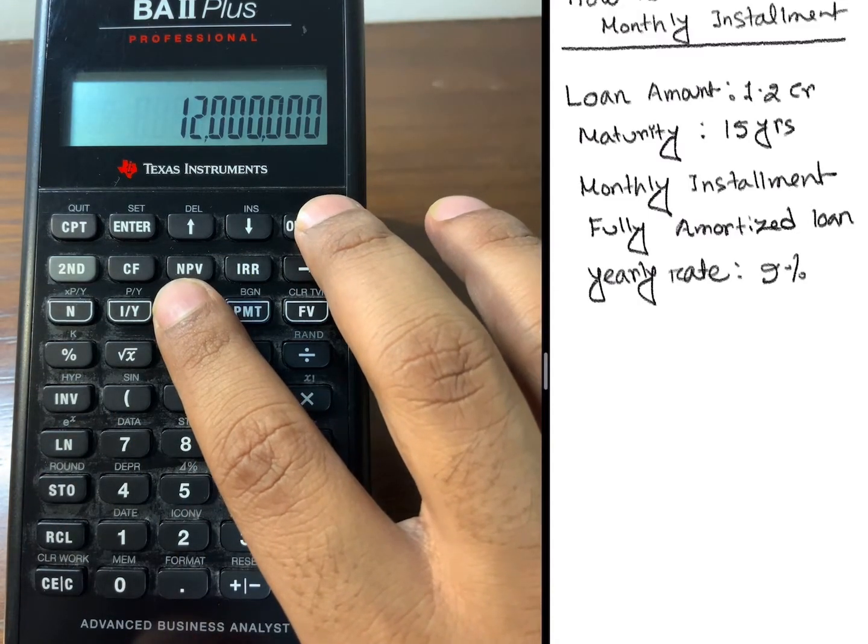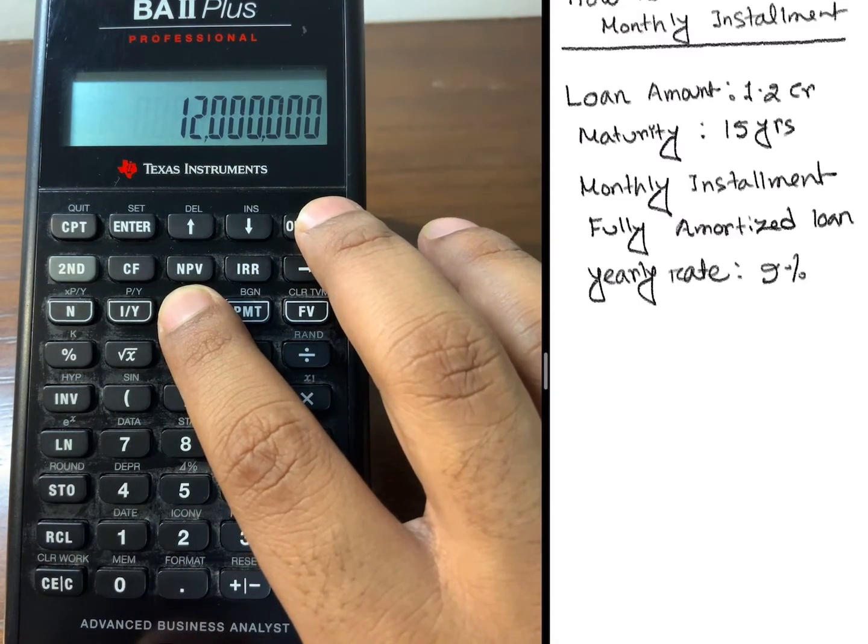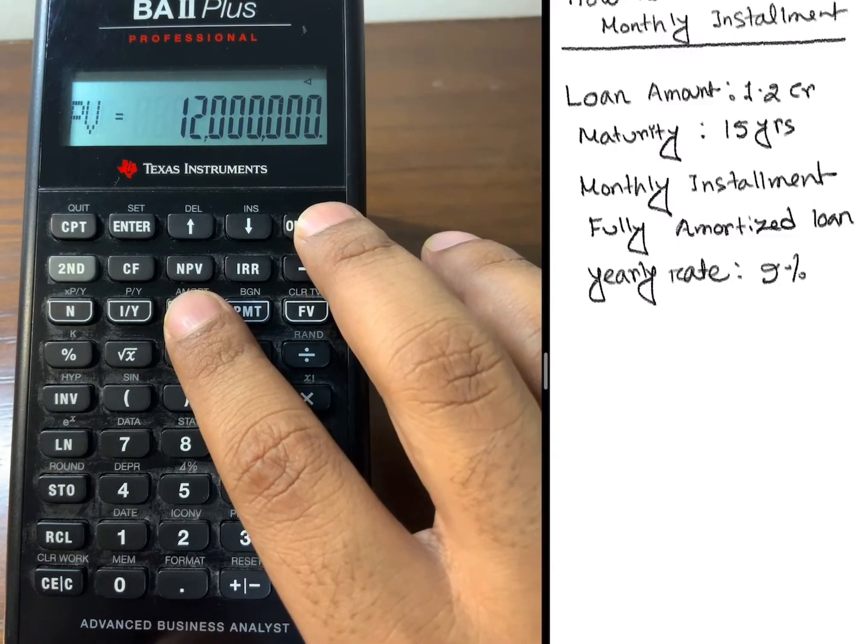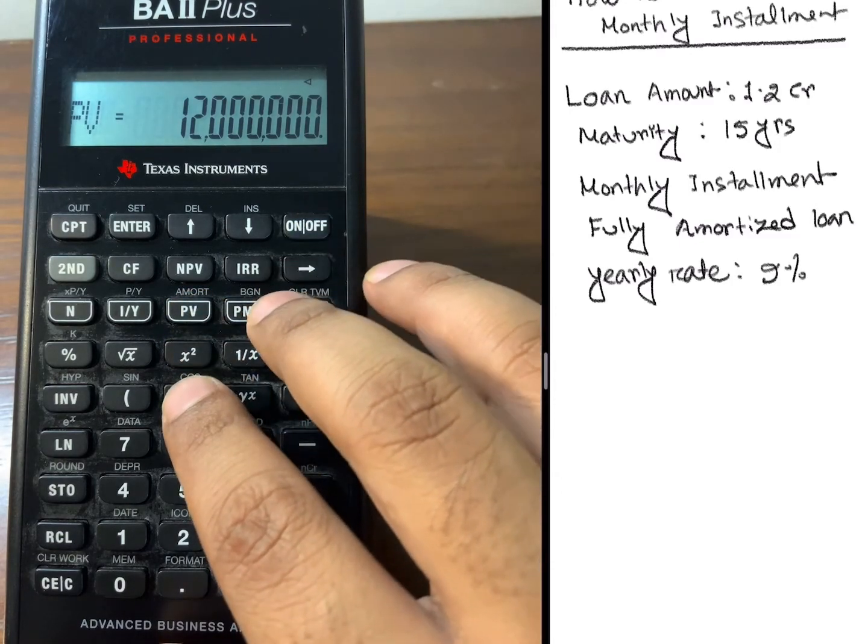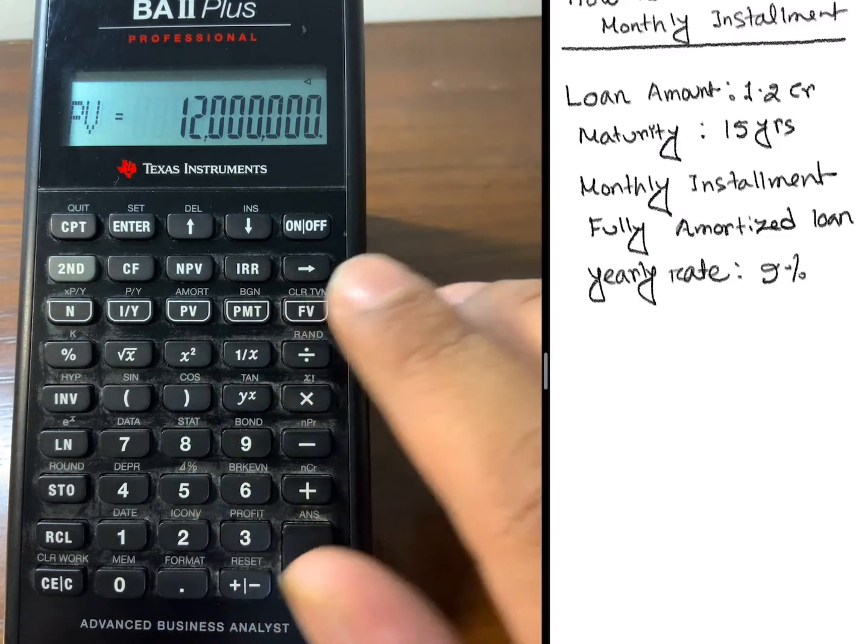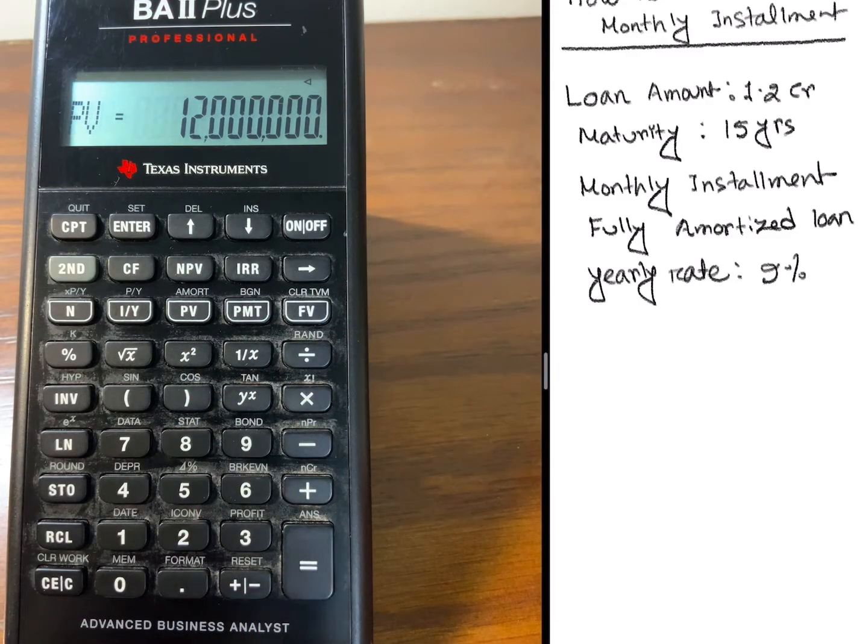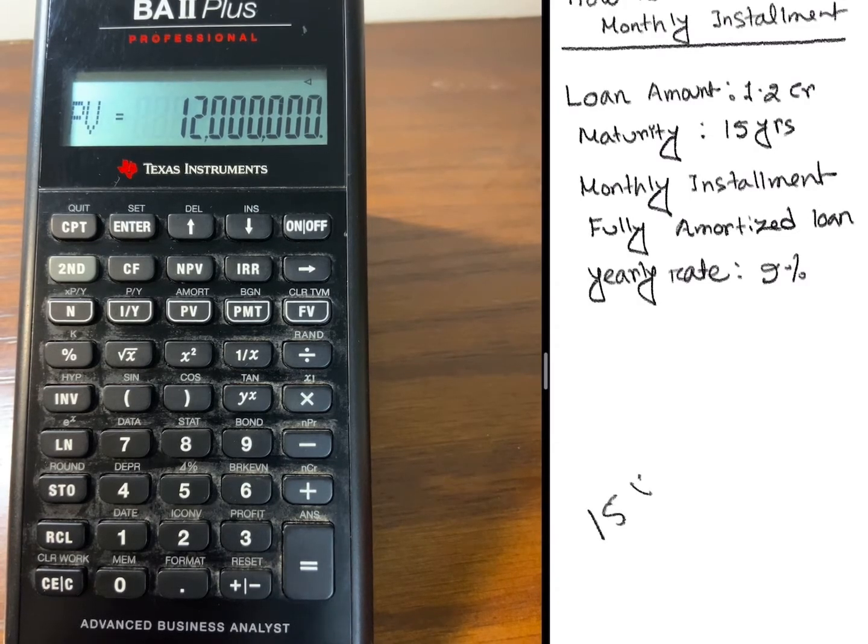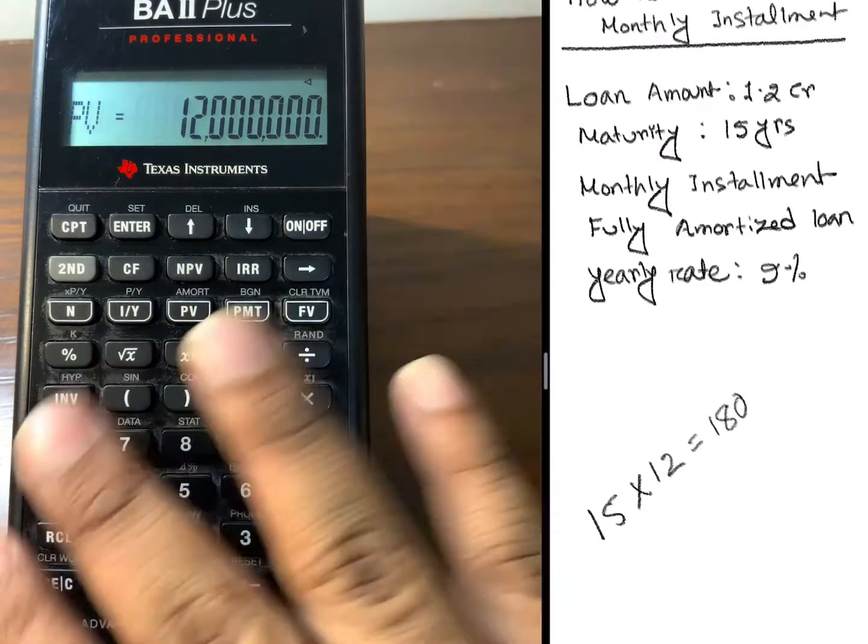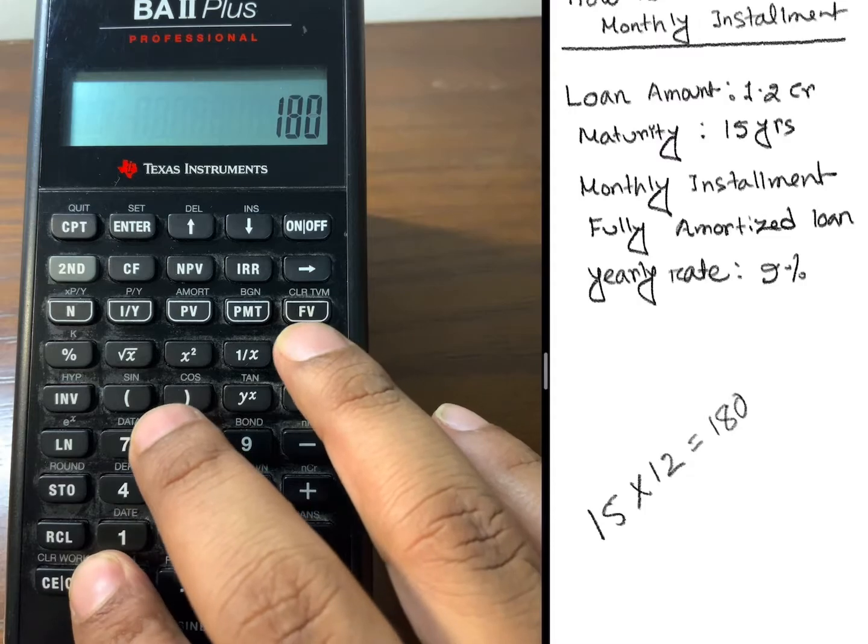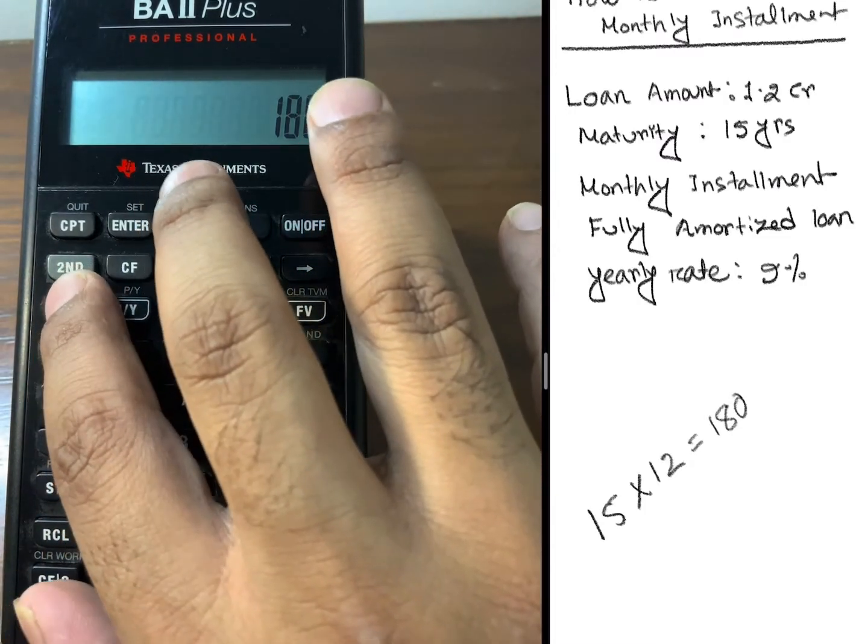Then I'll give the number of periods. Since the maturity is 15 years and it's a monthly installment, the total number of months will be 15 multiplied by 12. So there will be a total of 180 months. I need to type 180 and then press N.